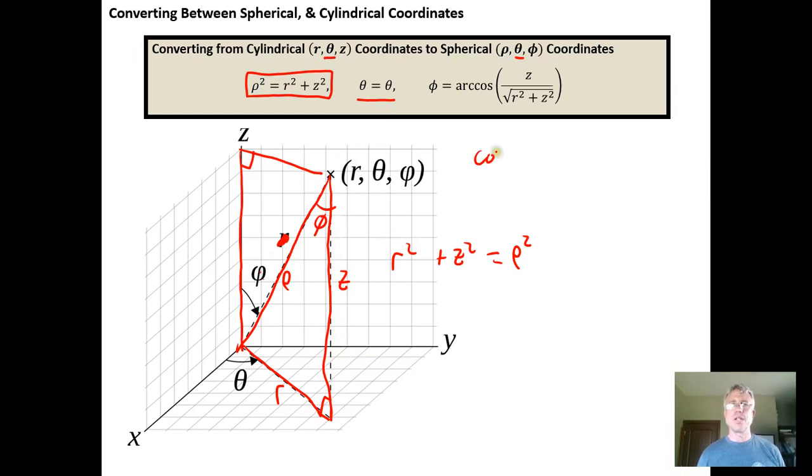And we've already established that the cosine of φ is equal to z over ρ. By trigonometry the side adjacent the angle is z. Adjacent over hypotenuse is the cosine of the angle.